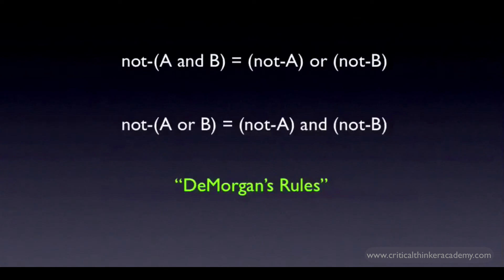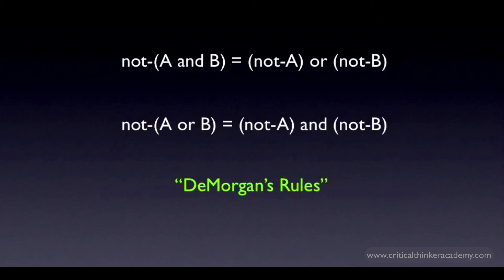Let's put the rules for the contradictory of the conjunction and the disjunction side by side so we can appreciate the formal similarity. In propositional logic, these together are known as De Morgan's rules, or De Morgan's laws, named after Augustus De Morgan, who formalized these rules in the 19th century. They're also a part of Boolean logic and are used all the time in computer science and electrical engineering in the design of digital circuits.